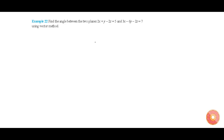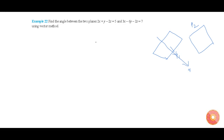In this question we are going to find out the angle between two planes. Let us say this is our plane P1 and this is our plane P2. The normal for this plane is n1 and the normal for this plane is n2. The angle between the planes is nothing but the angle between the normals. Therefore, to find the angle between two planes we need to find the angle between the normals.